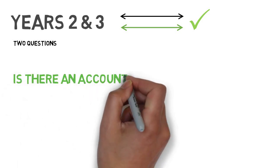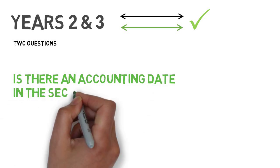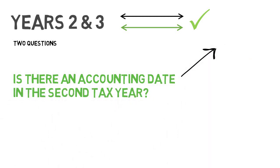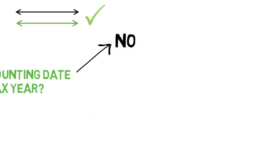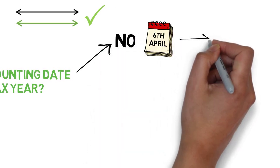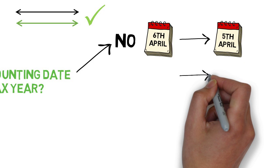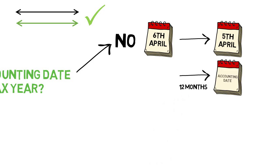Question one: is there an accounting date in the second tax year? If the answer is no, then your basis period for your second tax return will be the tax year itself — from the 6th of April to the following 5th of April — and then subsequent basis periods will be the 12 months to your accounting date. It does mean that you'll pay tax twice on a proportion of profits from that second year.